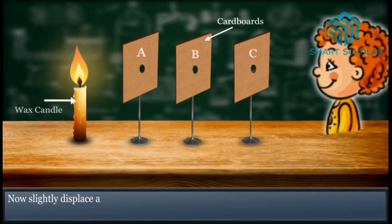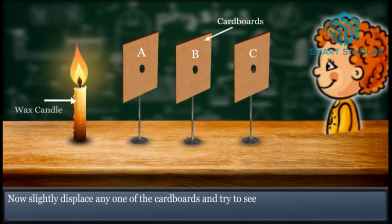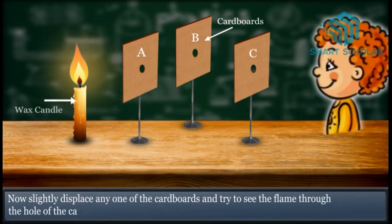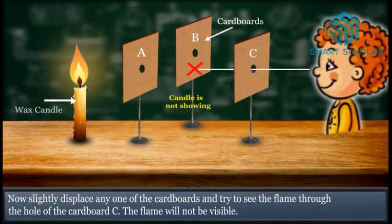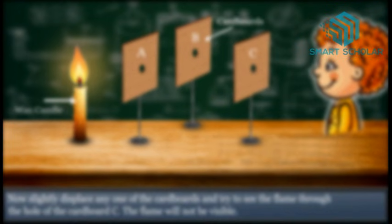Now slowly displace any one of the cardboards and try to see the flame through the hole of Cardboard C. The flame will not be visible.